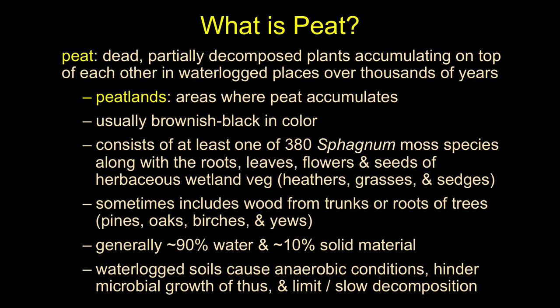Peat is created from sphagnum moss — about 380 species, all closely related. These grow and die, slowly building up the matrix. Below the top active layer of living moss (usually less than half a meter), you get into black, dead, decaying material. The anaerobic conditions mean things don't rot quickly — some of our oldest mummified human remains of common people are found in peat bogs because there's so little oxygen that decomposition is very slow.